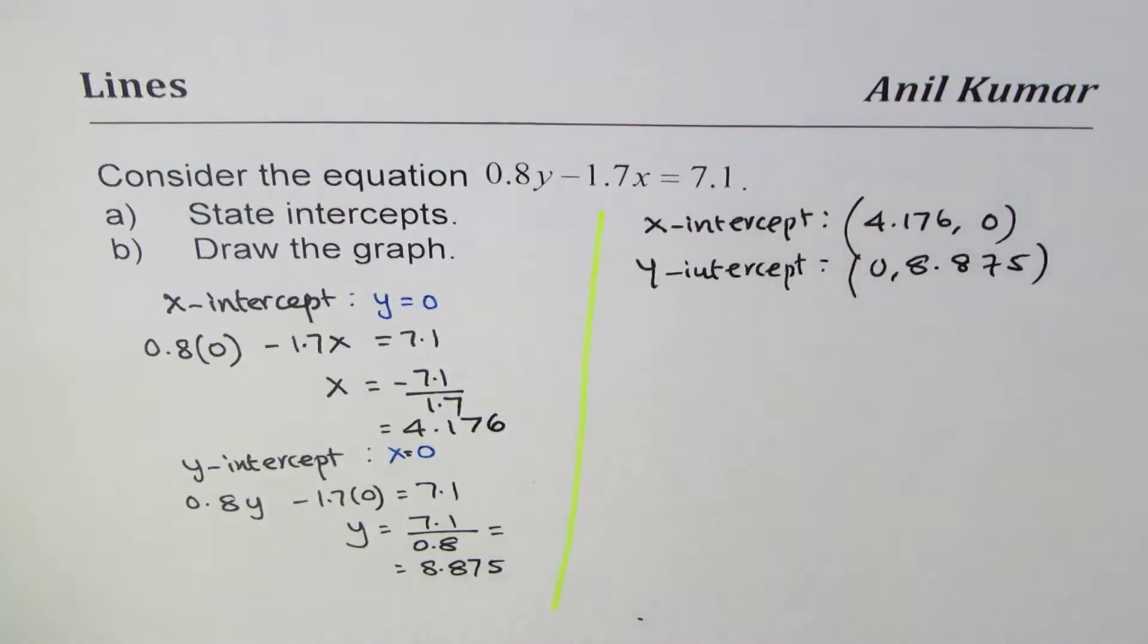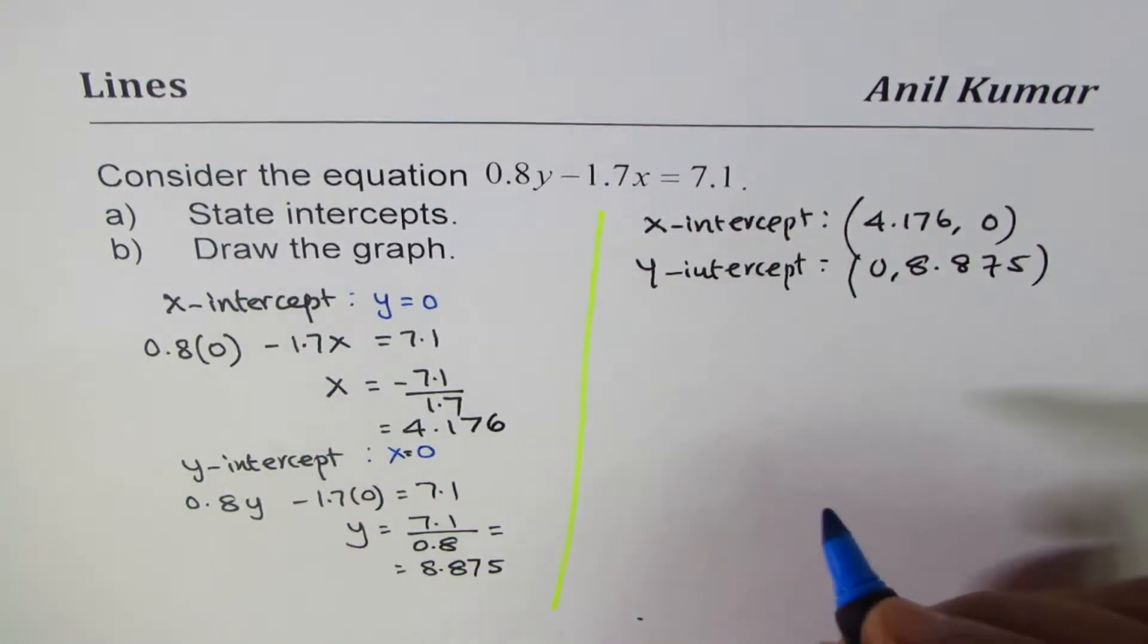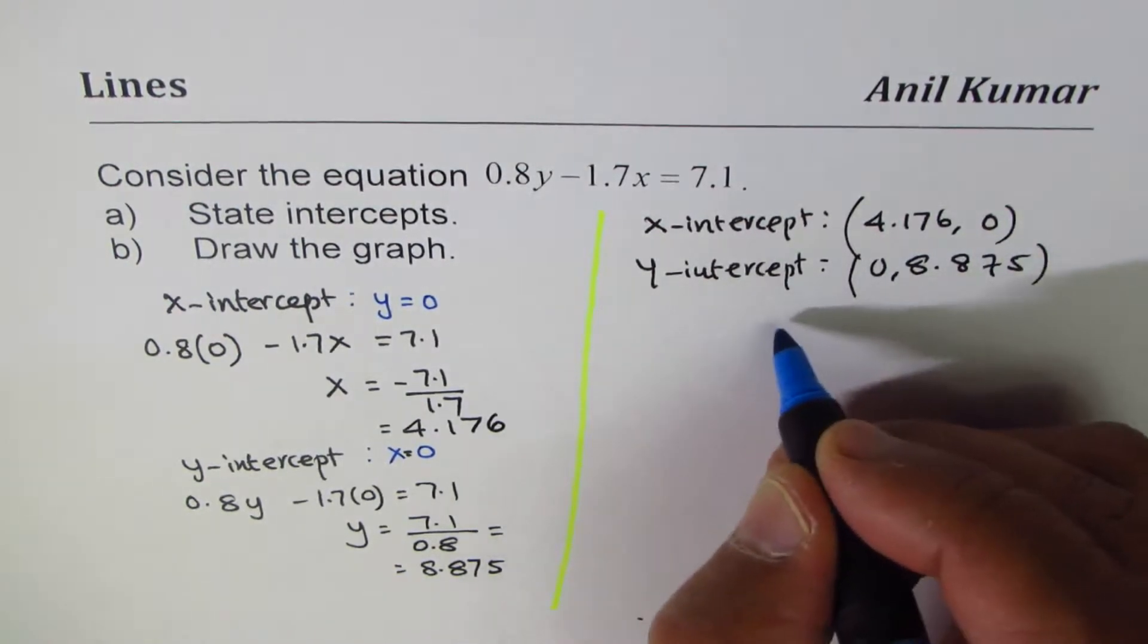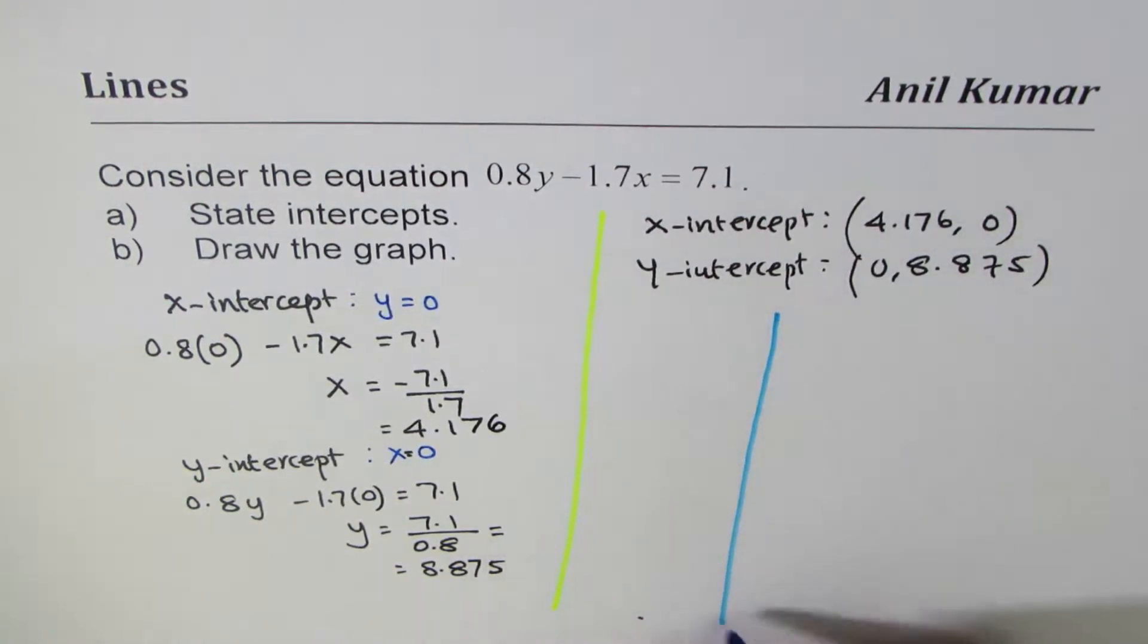Now the difficult part here is to draw the graph. Both are positive values. What I will do is actually draw the graph like this.